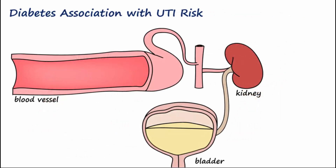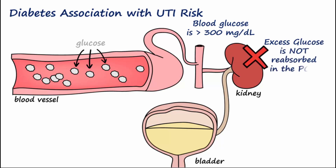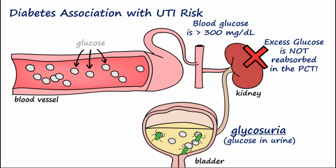With diabetes, elevated blood glucose contributes to bacteriuria. When blood glucose levels exceed 300, the kidneys are unable to reabsorb all the filtered glucose. The glucose that is not reabsorbed remains in the filtrate — this is called glycosuria. Bacteria now have a food source, and this promotes their colonization in the urinary tract.